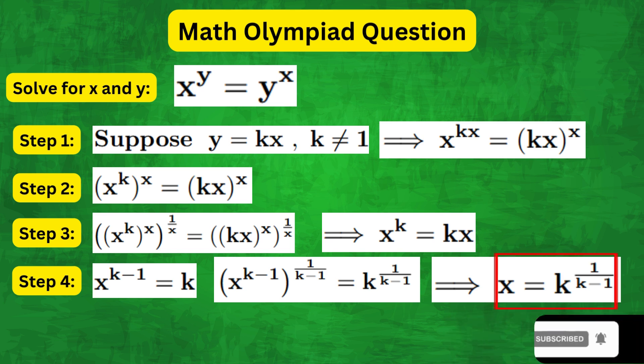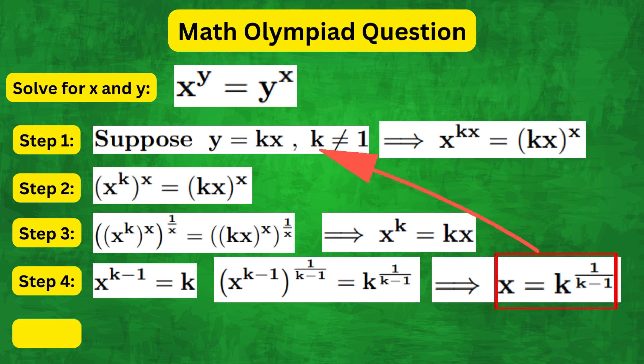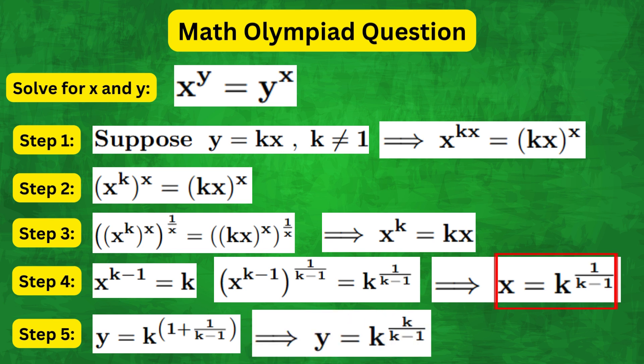Now we want to get y in terms of k as well, and since y equals kx, plugging in x, we get y equals k to the power of 1 plus 1 over k minus 1. And tidying up the power, we get y equals k to the power of k over k minus 1.